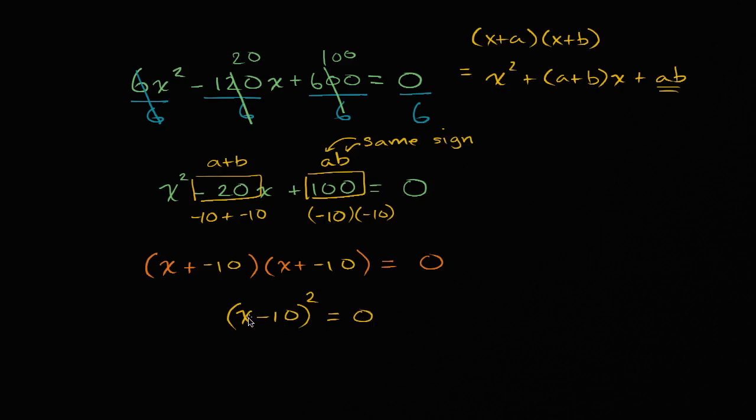And so the only way that the left hand side is going to be equal to 0 is if x - 10 is equal to 0. You could think of this as taking the square root of both sides. And it doesn't matter if you're taking the positive or negative square root or both of them. The square root of 0 is 0. And so we would say that x - 10 needs to be equal to 0. And so x, adding 10 to both sides of this, you have x is equal to 10 is the solution to this quadratic equation.